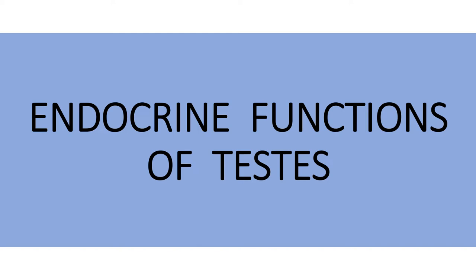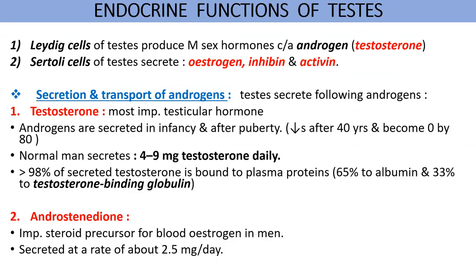The endocrine functions of the testes are mainly performed by two types of cells: Leydig cells and Sertoli cells. The Leydig cells produce the male sex hormones called androgens — the major androgen is testosterone. The Sertoli cells secrete estrogen, inhibin, and activin hormones in small amounts. Apart from testosterone, other androgens secreted by the testes include androstenedione and dihydrotestosterone.